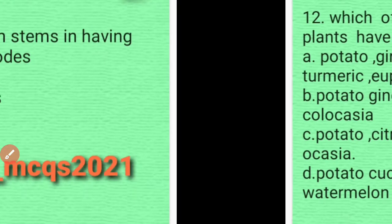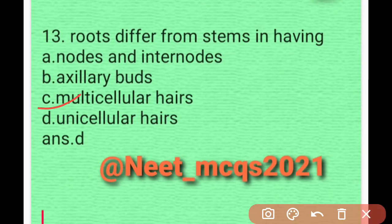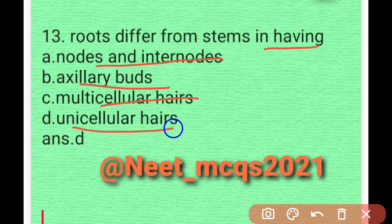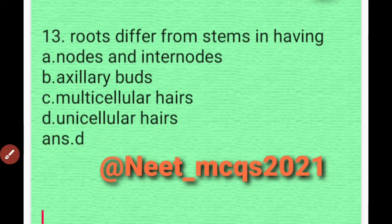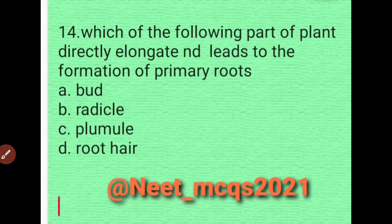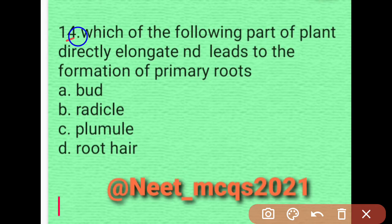Question 12: Roots differ from stems in having — nodes and internodes, axillary buds, multicellular hairs, or unicellular hairs? The correct answer is unicellular hairs. Option D is correct.